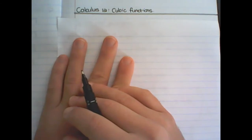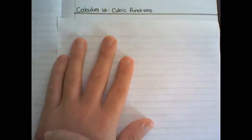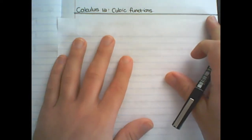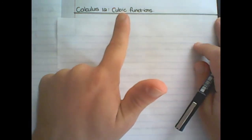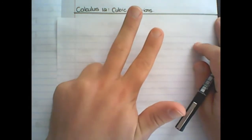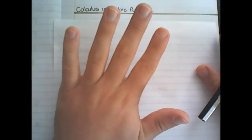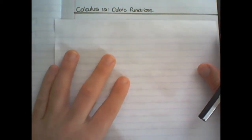In lesson 10 we learned how to draw a cubic function, and in lesson 11 we learned how to interpret the graph. Now we are going to continue drawing cubic functions and we are going to follow the five steps: to find the y-intercept, to find the x-intercepts, to find the stationary points, to find the point of inflection, and then to draw. We are going to follow that same five steps as used in lesson 10.